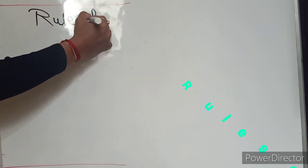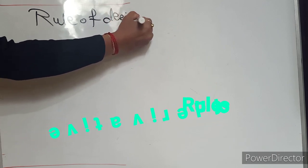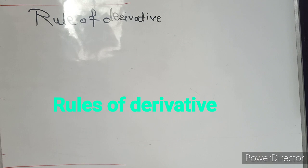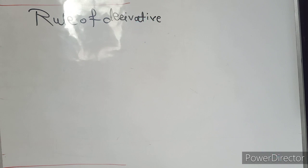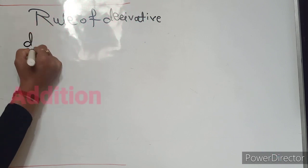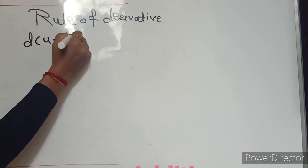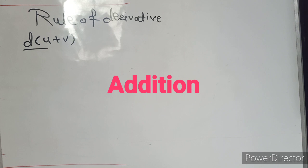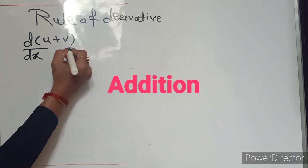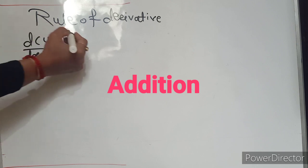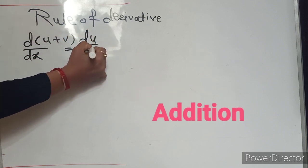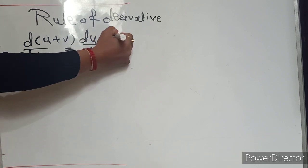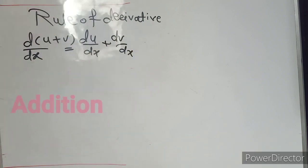What are the rules of derivative? For example, if we have the derivative of u plus v — where u and v are two separate different functions — and we want to find the derivative of u plus v, then this is the addition rule for derivative. We simply separate the derivative: derivative of u with respect to x, plus derivative of v with respect to x.